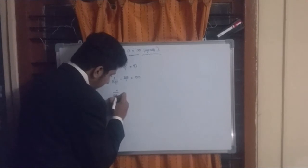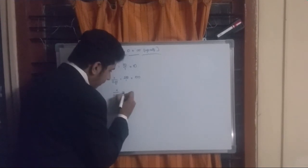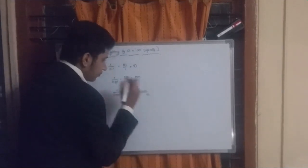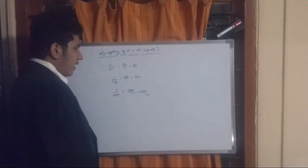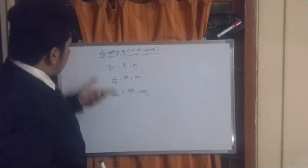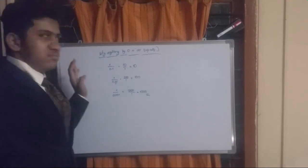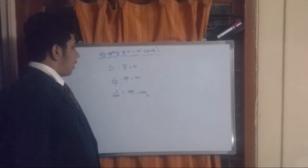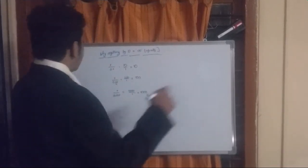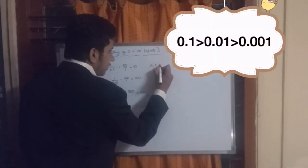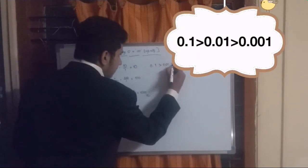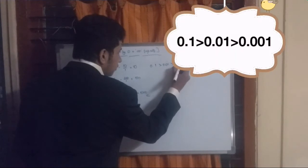So as you can observe here, there is a pattern. As you can observe, 0.1 is greater than 0.01, which is greater than 0.001.